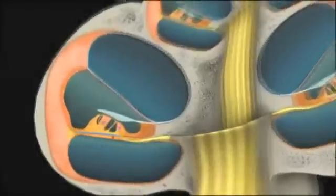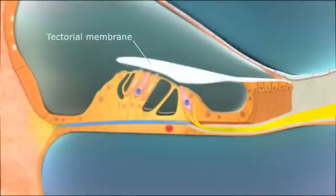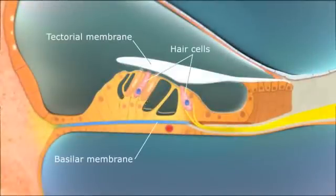The scala media includes structures from the tectorial membrane, basilar membrane, and hair cells, which sense the mechanical forces.